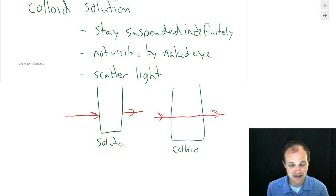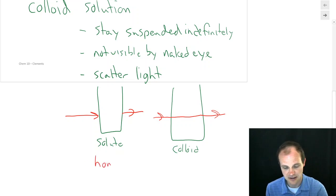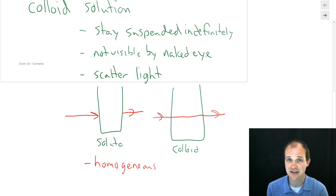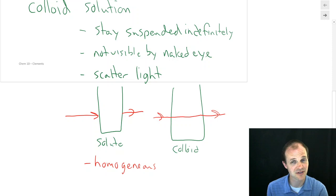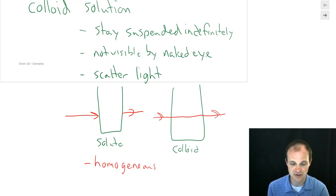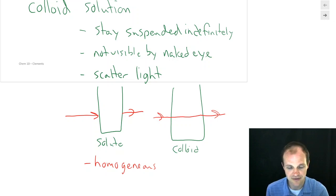Colloids are still considered homogeneous because they are mixed together and you can't easily separate them. You can't take a coffee filter and separate them out — they'll just go straight through.